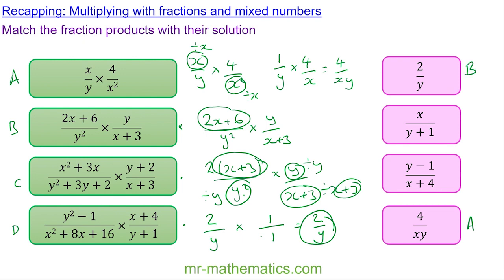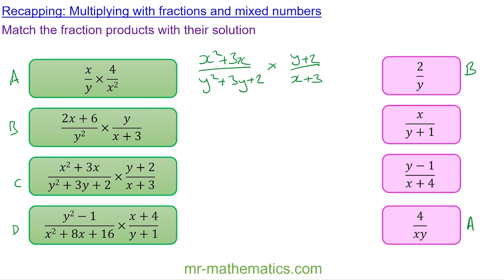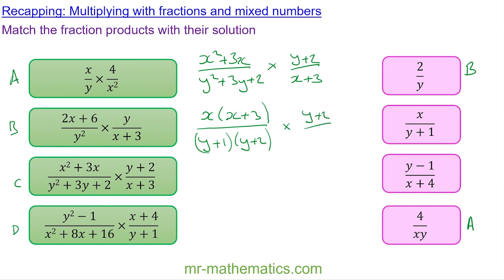So product b matches with this one. For question c we're going to factorize each expression. We have x lots of x plus 3 over y plus 1 lots of y plus 2, multiplied by y plus 2 over x plus 3. You can see we can simplify x plus 3 with x plus 3, and y plus 2 with y plus 2, so we're left with x over y plus 1.